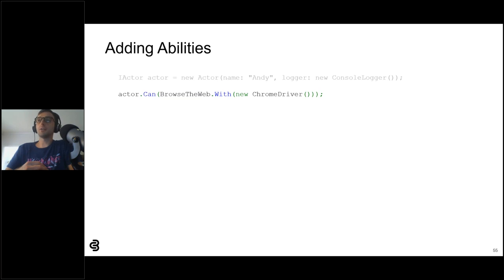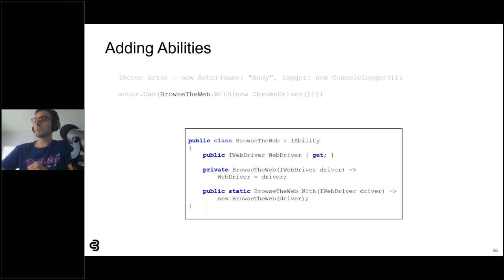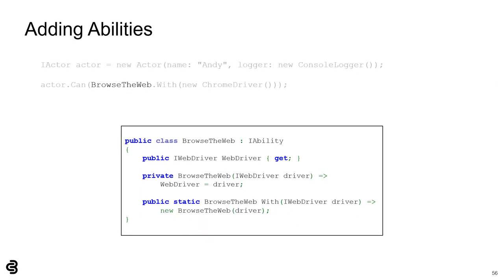Abilities enable Actors to initiate interactions. For example, an Actor needs a Selenium WebDriver instance to click elements on a webpage. The Actor can browse the web with a new ChromeDriver. Boa Constrictor's fluent-like syntax makes its call chains very readable. Actor.Can adds an ability to an Actor. BrowseTheWeb is an ability that enables Actors to perform web UI interactions. BrowseTheWeb.With provides the WebDriver object the Actor will use — in this case, a new ChromeDriver. All abilities must implement the iAbility interface. Actors can be given any number of abilities.